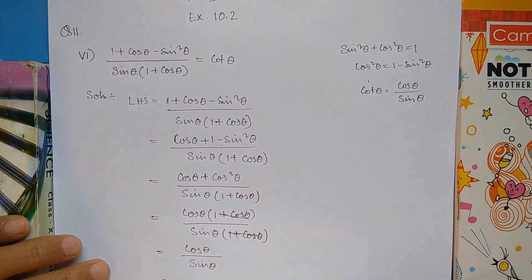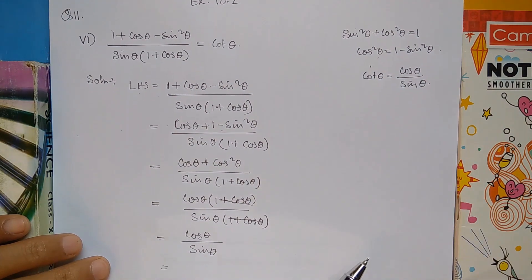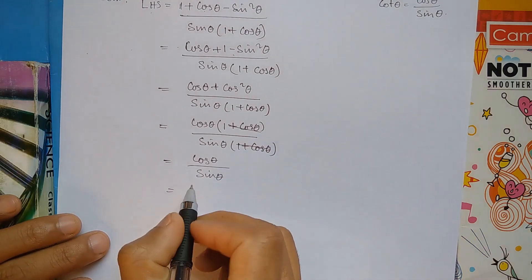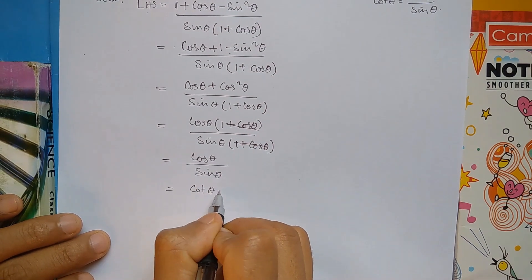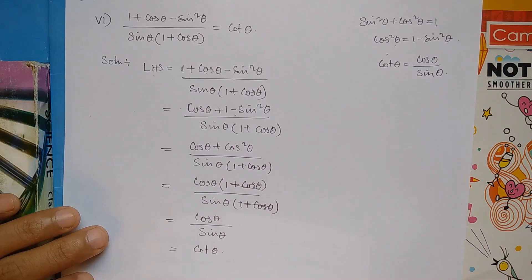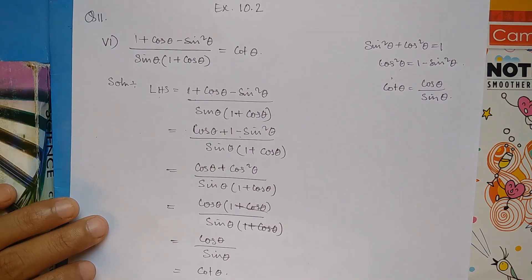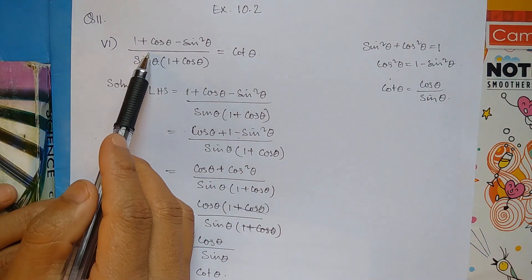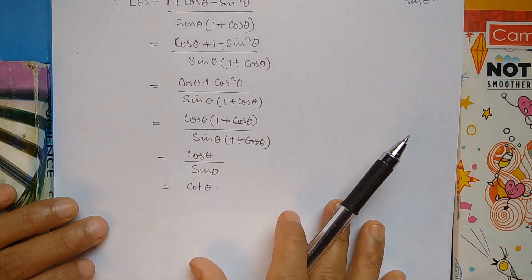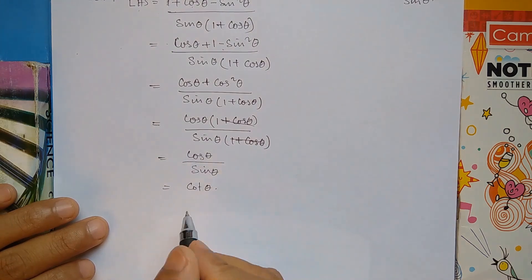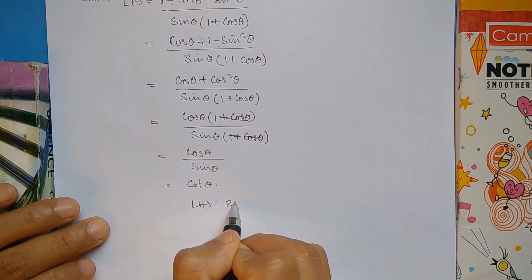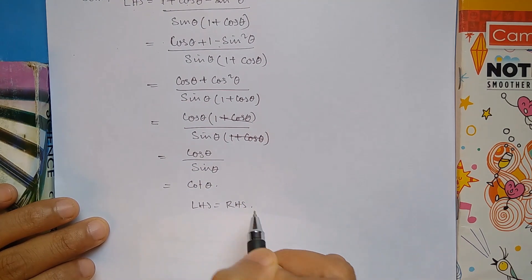We are going to get cot theta, which is cos theta by sine theta. The formula for cot theta is equal to cos theta by sine theta. Therefore, left hand side is equal to right hand side. This completes the proof.